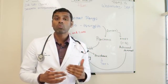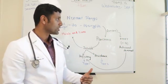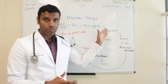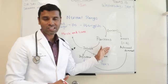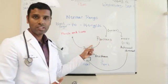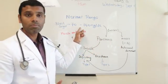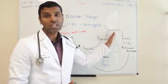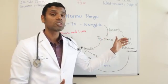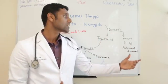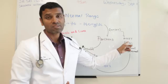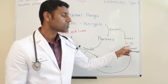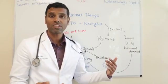Now that we've covered type 1 and type 2, what is maturity onset diabetes of the young? When your blood sugar goes up, your pancreas has to sense the high blood sugar and release insulin to bring it back to the normal range. But if there is a problem with the sensor so that the pancreas is not able to sense the high blood sugar spike — that's what we call maturity onset diabetes of the young. There are almost 14 variants, of which types 1 to 3 are the most common forms of MODY.